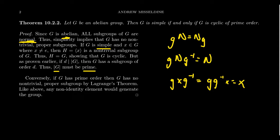The other possibility is the trivial group itself, but we're not going to consider the trivial group to be simple — much the same reason we don't consider 1 to be prime. If we go the other way: if G has prime order, then it's necessarily cyclic, and by Lagrange's theorem it has no non-trivial proper subgroups, hence no non-trivial proper normal subgroups, so it's simple. So abelian groups are simple if and only if they're cyclic of prime order.